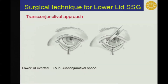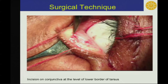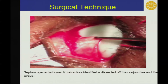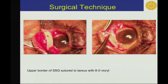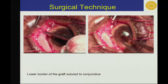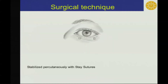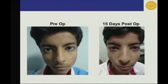For the lower lid, a trans-conjunctival approach is used, in which after anesthetizing the lid, an incision on the conjunctiva at the level of the lower border of tarsus is given. The septum is opened, the retractor is identified and dissected off from conjunctiva and tarsus. The upper border of the graft is sutured to the tarsus with vicryl, and the lower border is sutured to conjunctiva and stabilized percutaneously with stay sutures.